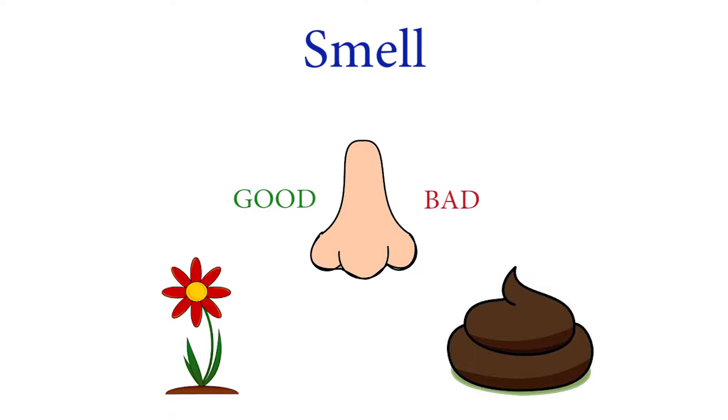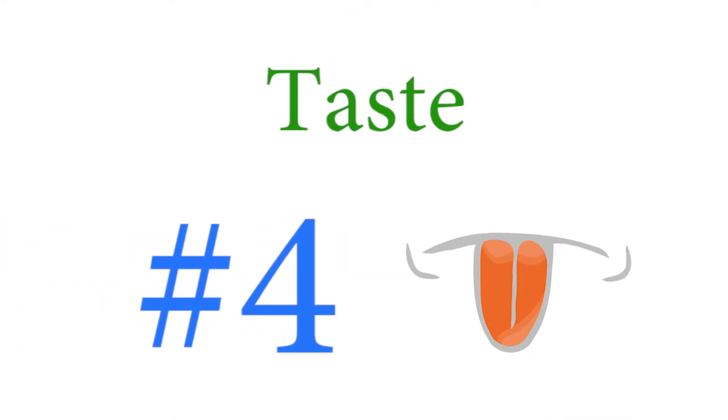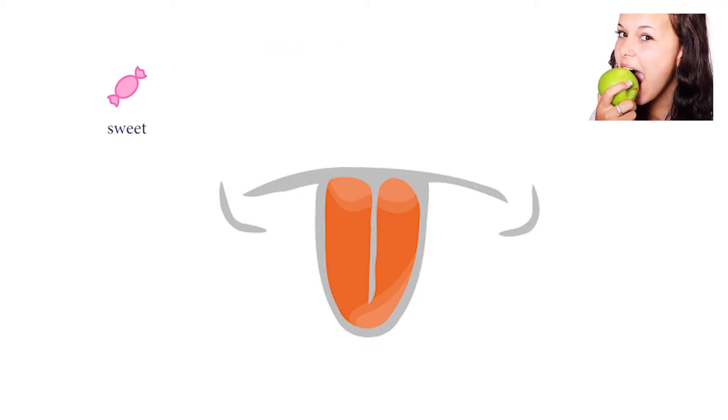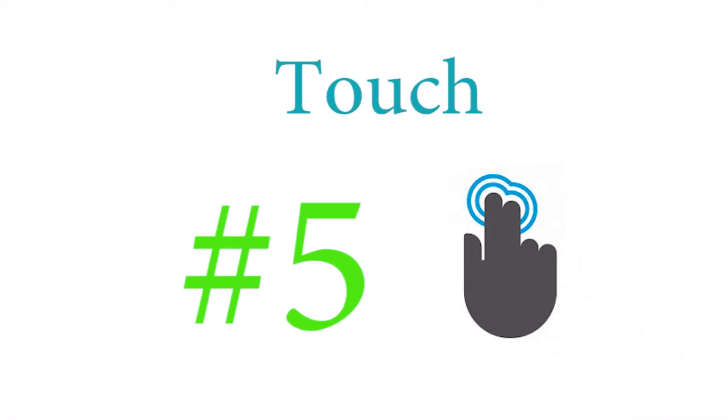Number four is taste. With our tongue we can determine the taste of food and whether it is sweet like candy, salty like pickles, sour like lemons, or bitter like bitter gourd.